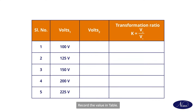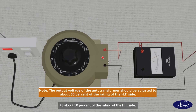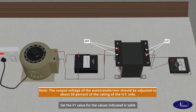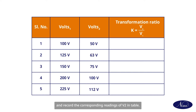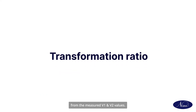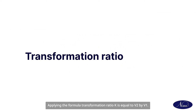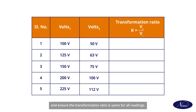Switch on the circuit and adjust the auto transformer to get the output voltage V1 equal to 100 volts and read V2. Record the value in the table. The output voltage of the auto transformer should be adjusted to about 50 percent of the rating of the HT side. Set the V1 value for the values indicated in the table and record the corresponding readings of V2. Calculate the transformation ratio from the measured V1 and V2 values applying the formula: transformation ratio K is equal to V2 divided by V1. Compare the calculated transformation ratio and ensure it is the same for all readings.